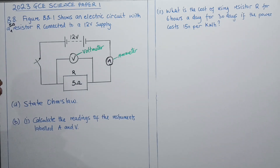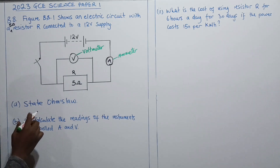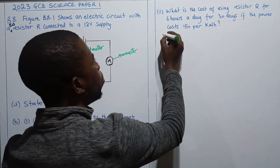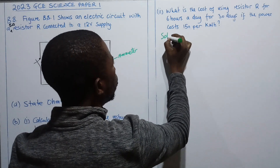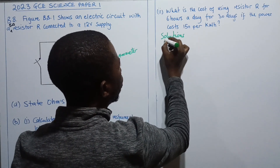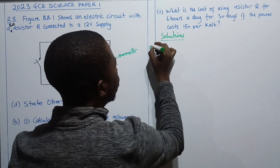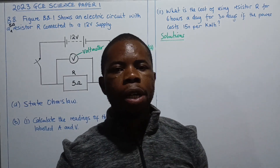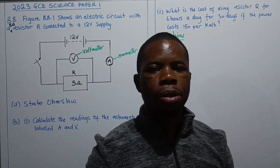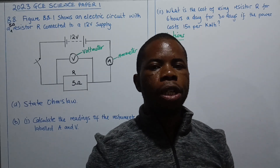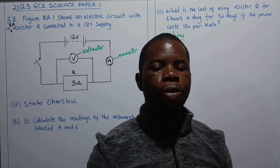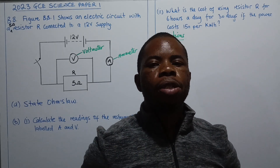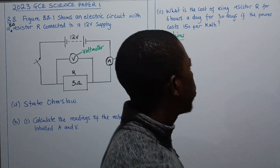The first question asks us to state Ohm's Law. Ohm's Law states that the current through a conductor is directly proportional to the voltage or potential difference, provided temperature and other physical quantities of the conductor are kept constant.